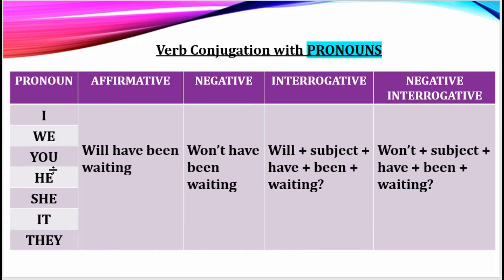For all pronouns — I, we, you, he, she, it, they — the structure is: will + subject + have been + waiting. For example: 'Will I have been waiting?' For negative interrogative: 'Won't we have been waiting?' This is the verb conjugation with pronouns.